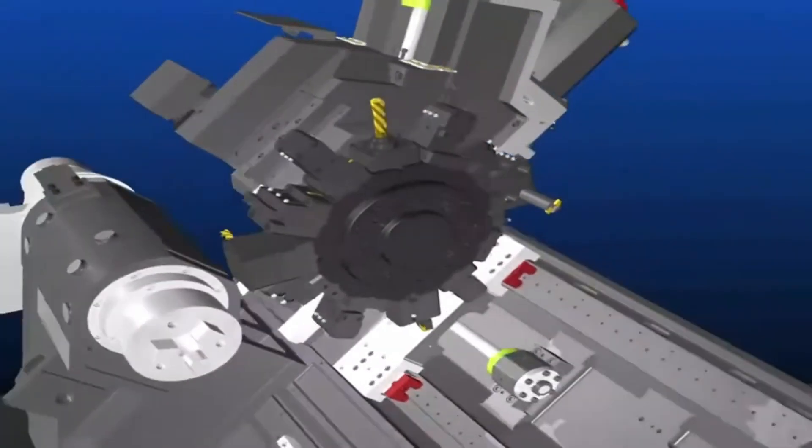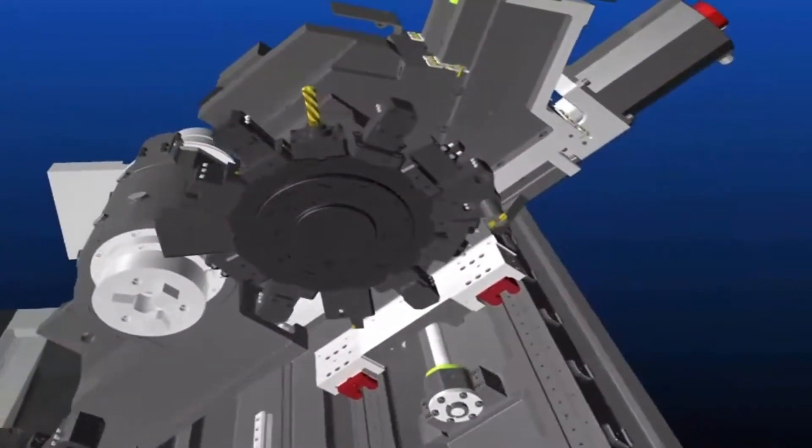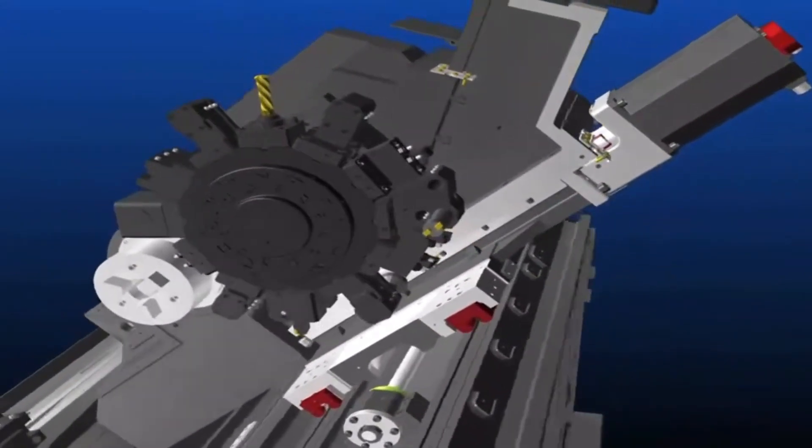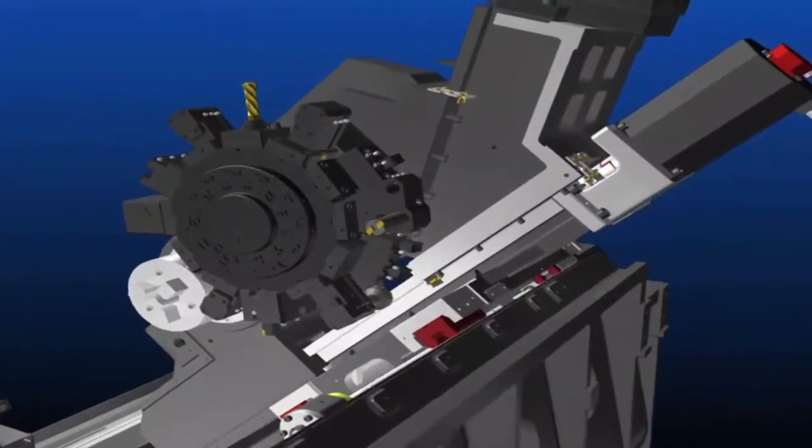Also, broad ball screws are applied in double anchor support method by pre-pressure to fulfill precise location to be safe from the heat.